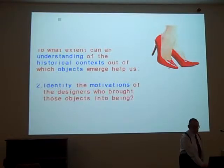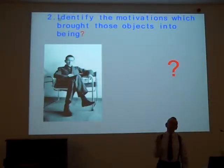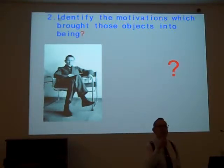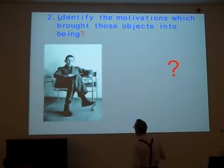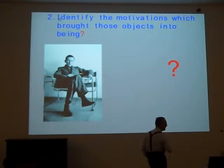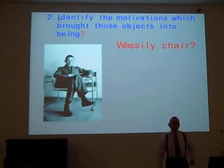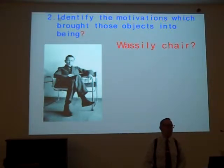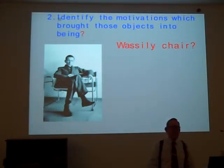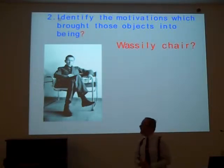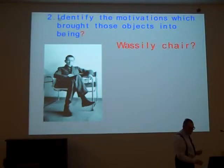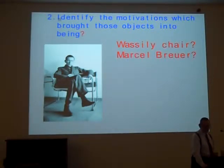Now, identifying the motivations of designers who brought those objects into being. I thought we'd look at something we probably all see — we might even have a name for it. It's this chair here, and we can see Vasily Kandinsky resting in it. Everybody knows it as the Vassily chair — very, very famous, and you can buy them now, there's quite a market. But I'm asking: what did they think they were doing? Designed by Marcel Breuer, 1925.